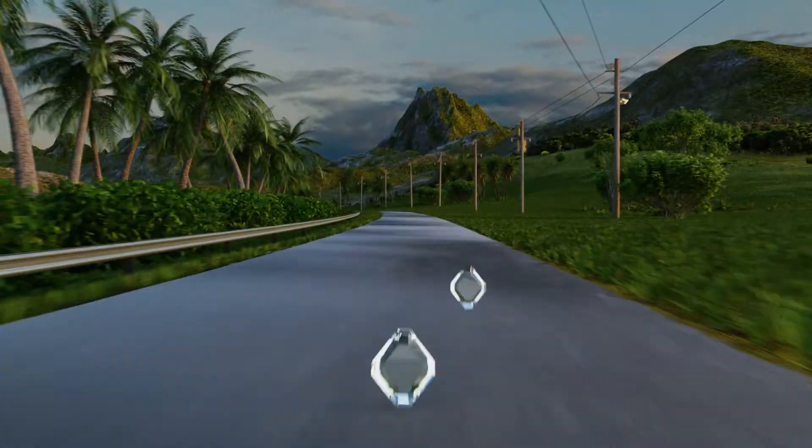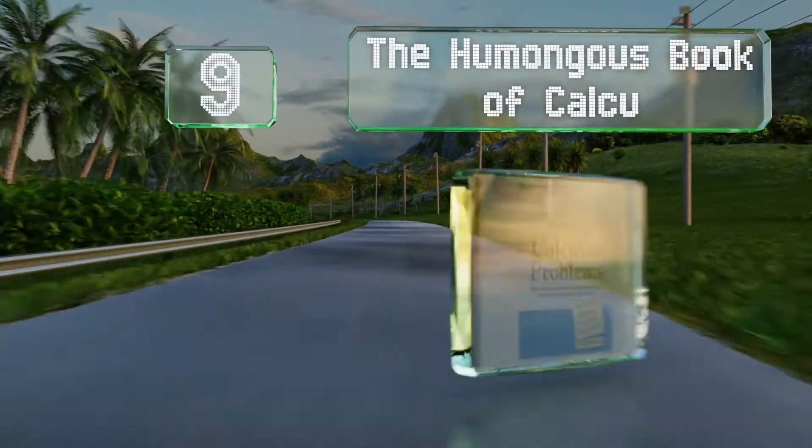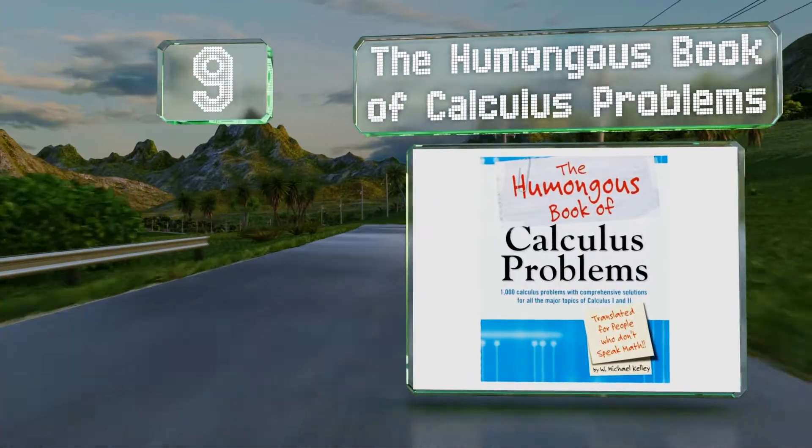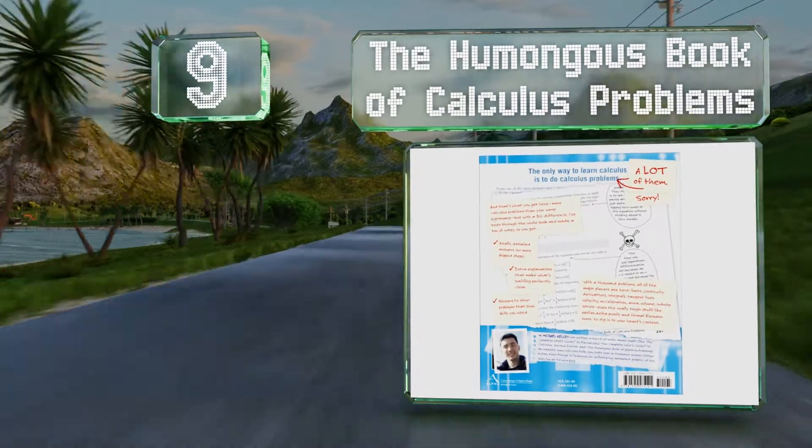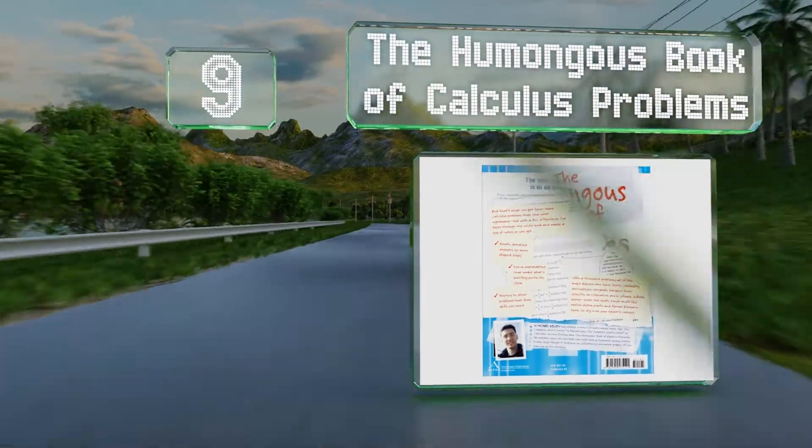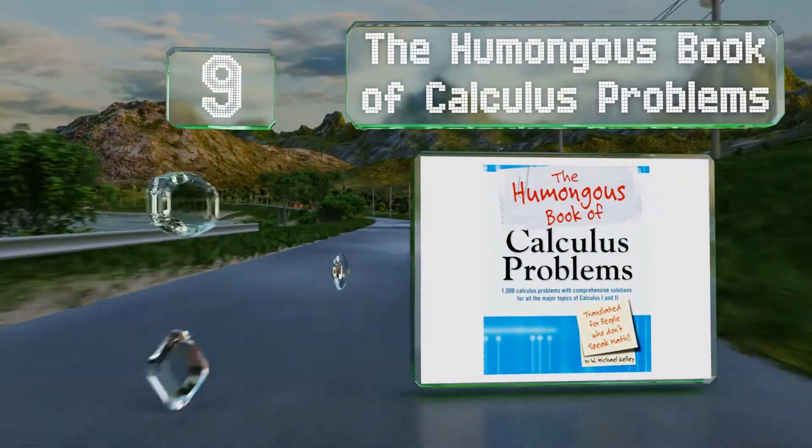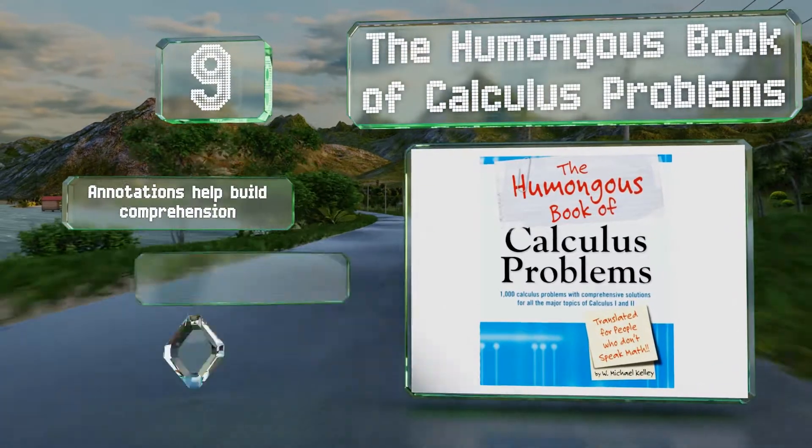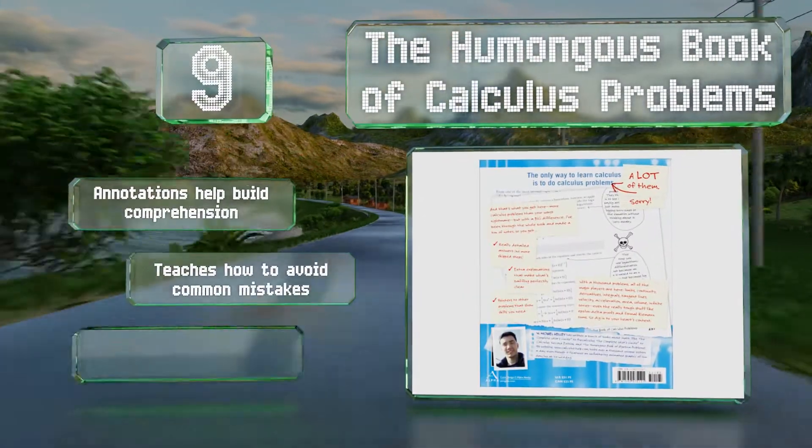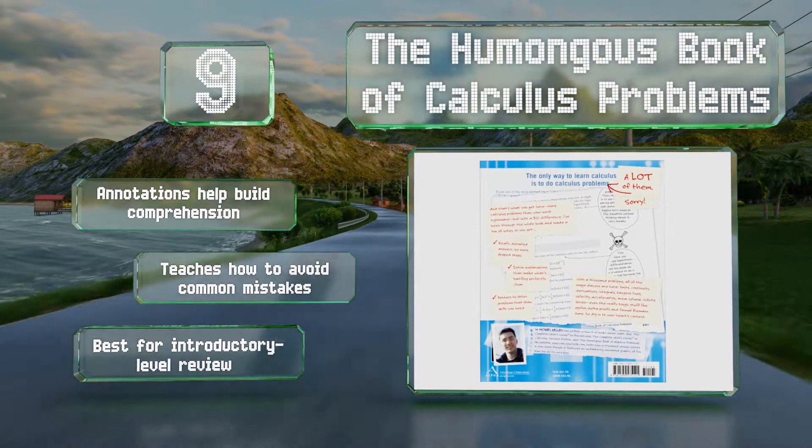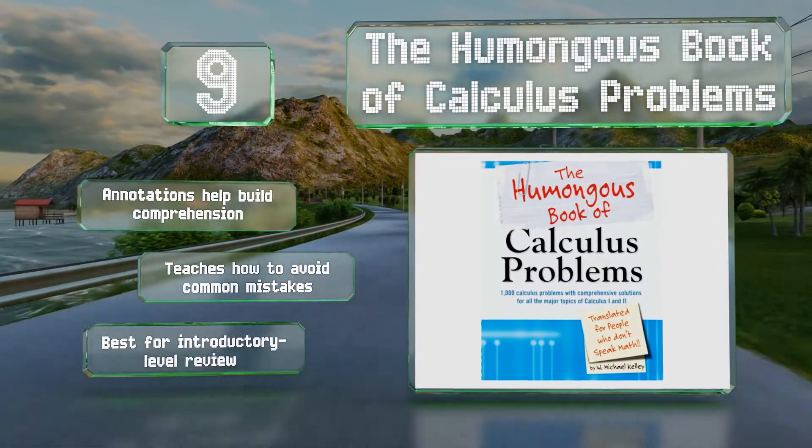At number 9, The Humongous Book of Calculus Problems isn't a textbook per se, but it does make an excellent companion for those learners who want more practice than their school-issued volumes give them. It's got over 1,000 problems so you're sure to not finish it too quickly. Annotations help build comprehension and it teaches you how to avoid common mistakes, but it is best for introductory-level review.